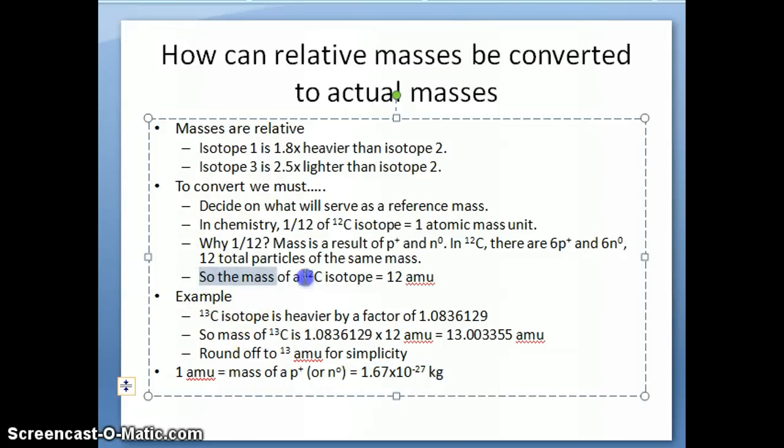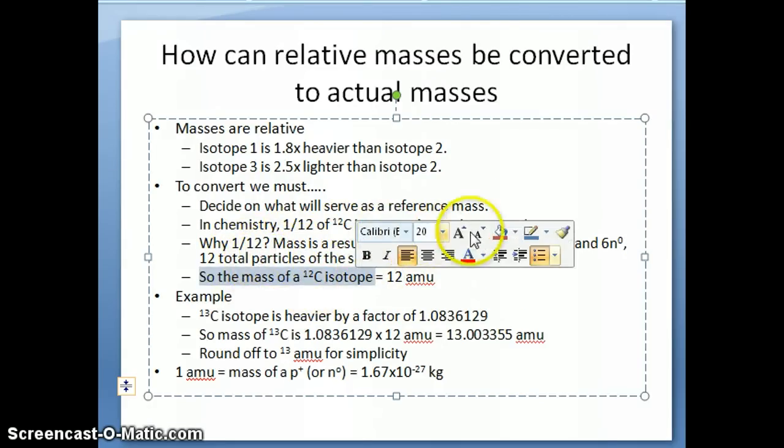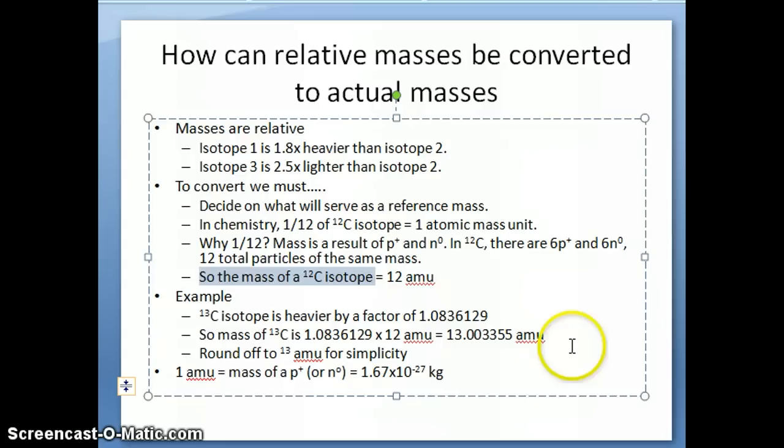So if you have a mass of a carbon-12 isotope, then the mass would be 12 AMU, because the carbon-12 isotope would contain 12 of those particles, and each of those particles weighs 1 AMU.